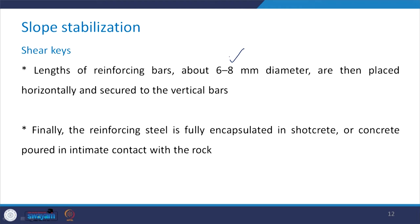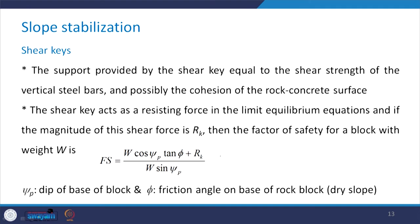These horizontal bars are secured to the vertical bars. Finally, the reinforcing steel is fully encapsulated in shotcrete or concrete, which is poured in intimate contact with the rock. The support provided by the shear key is equal to the shear strength of the vertical steel bars and possibly the cohesion of the rock-concrete surface.